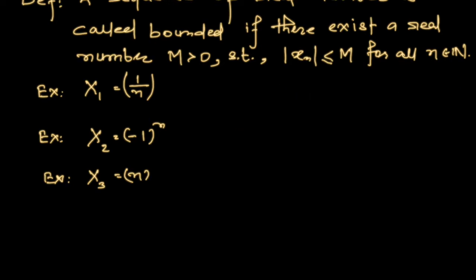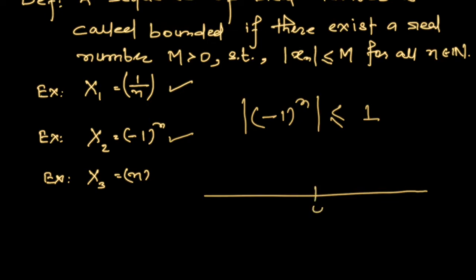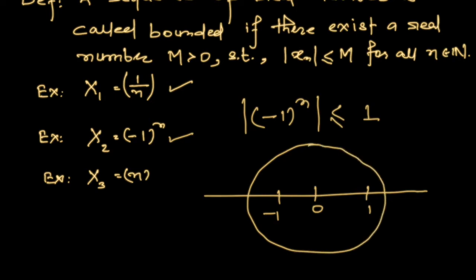We know that the sequence 1/n is actually convergent. Now we look at a sequence which is not convergent but is bounded. The sequence (-1)^n is not convergent, but it is bounded by 1. On the number line we can see 0, 1, and -1, and if we take a circle of radius greater than or equal to 1, all the terms lie inside the circle, so this is bounded.